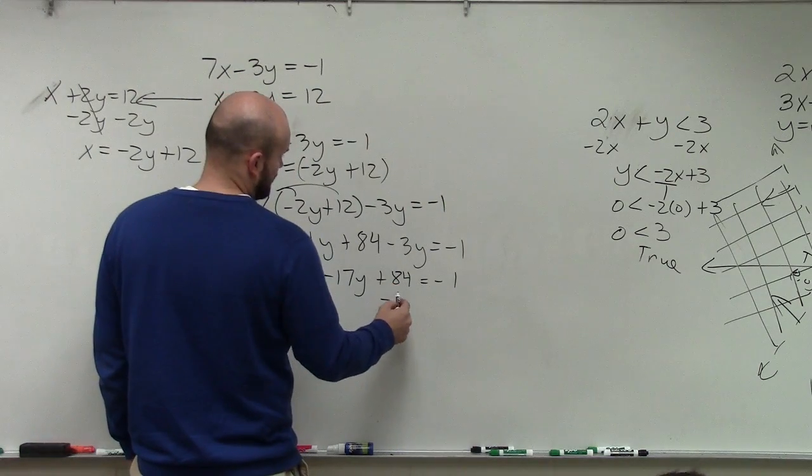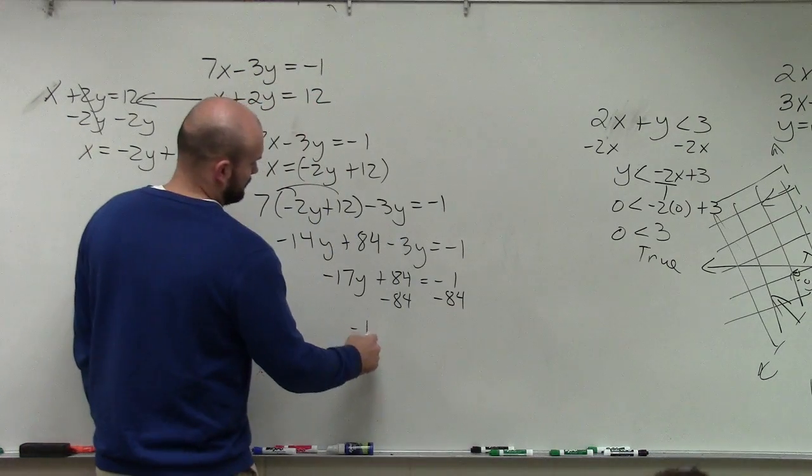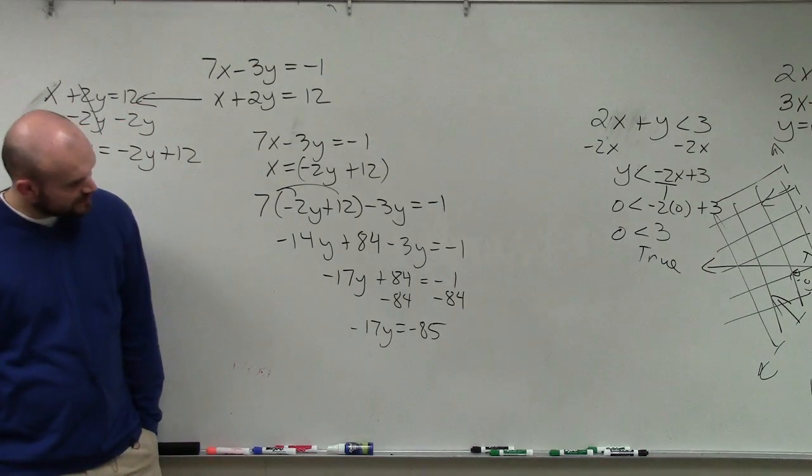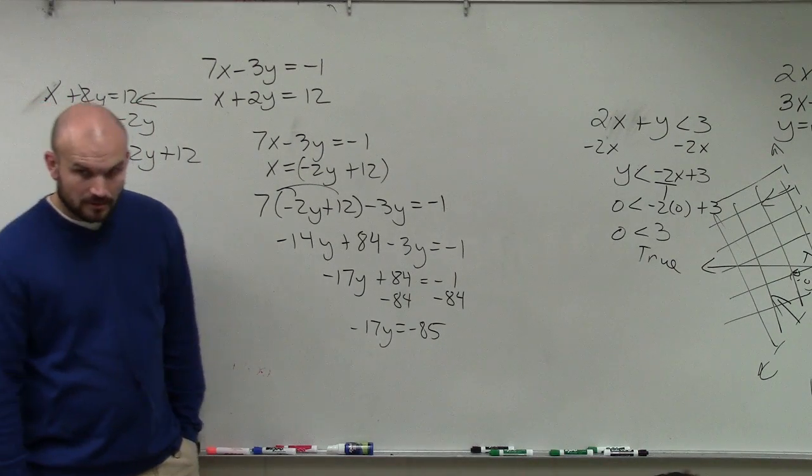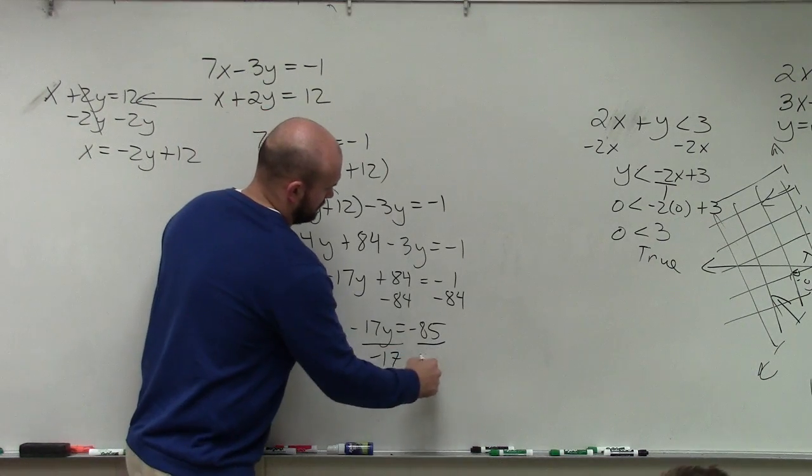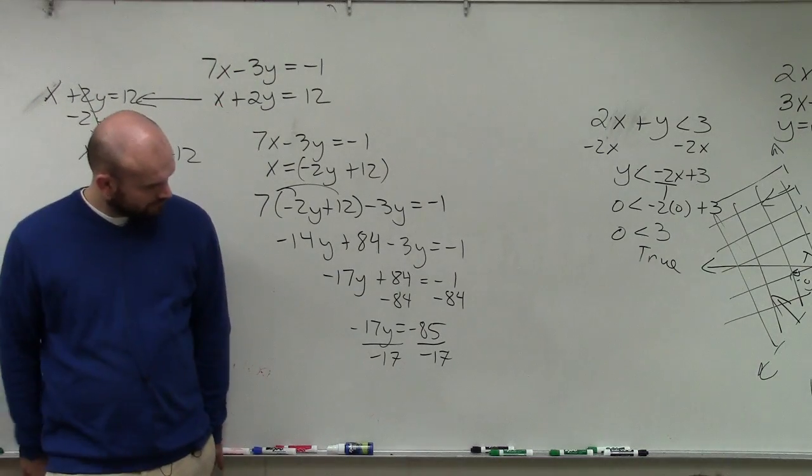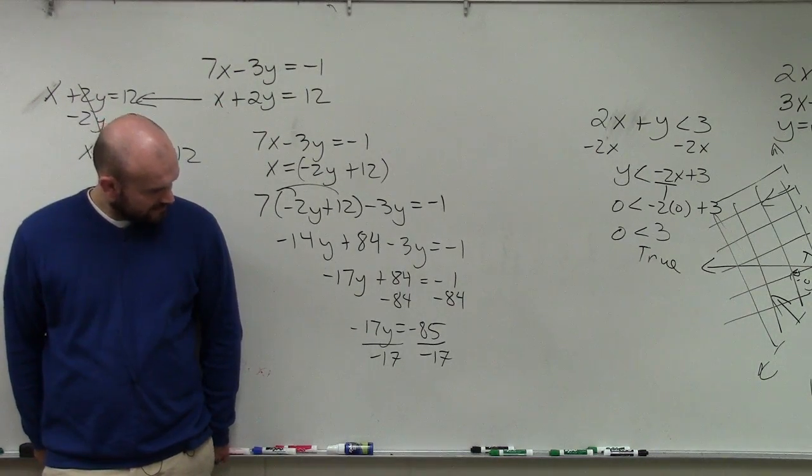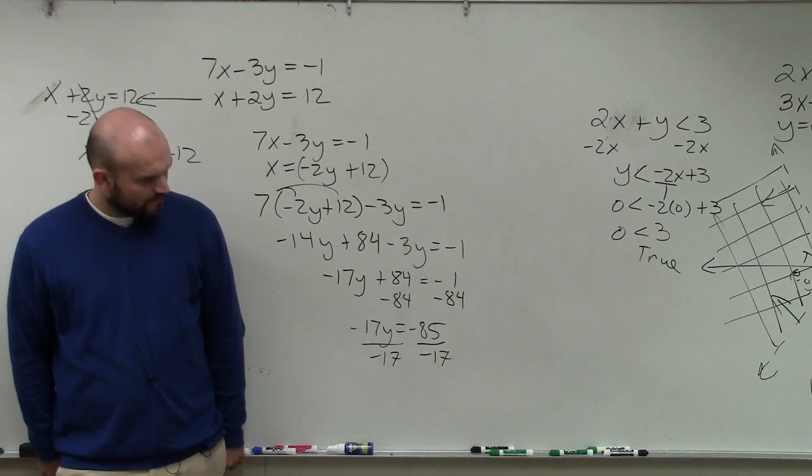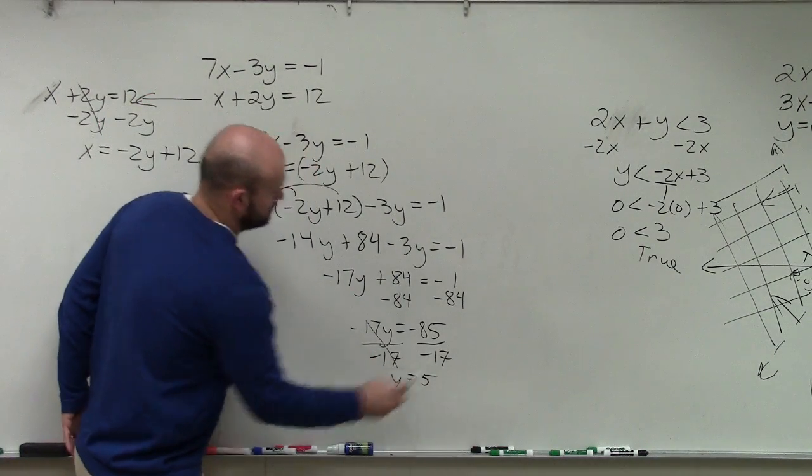84, I'm sorry, subtract 84, negative 17y equals negative 85. Now 35, or 34, 4, so that goes in there 5 times.